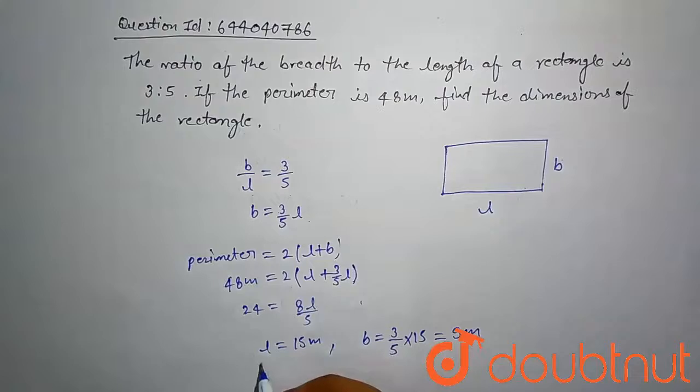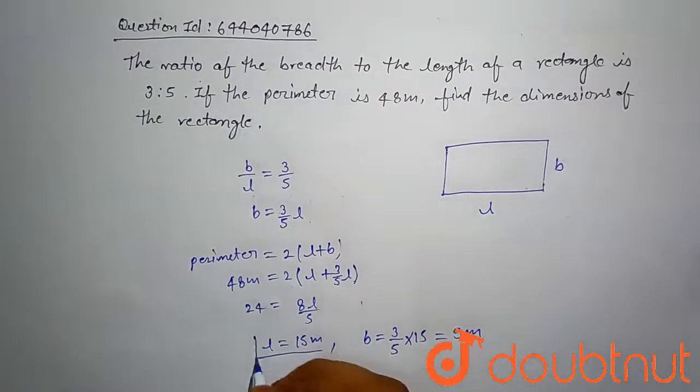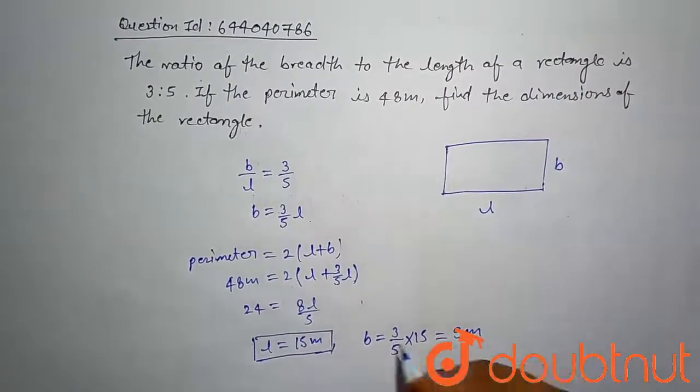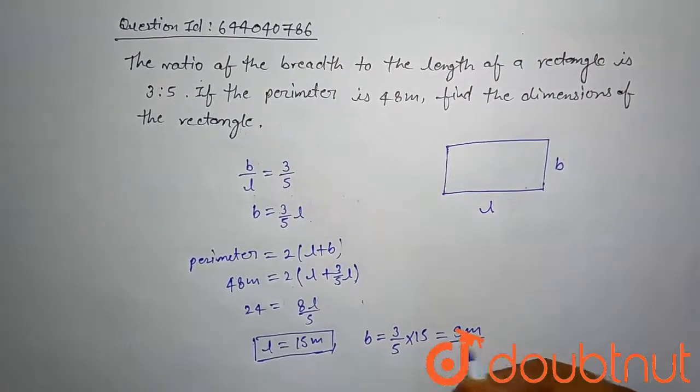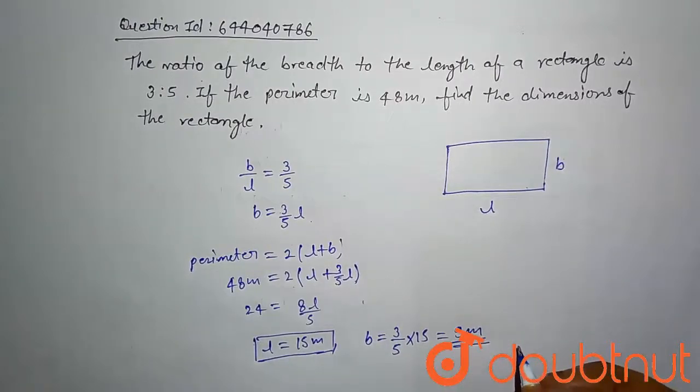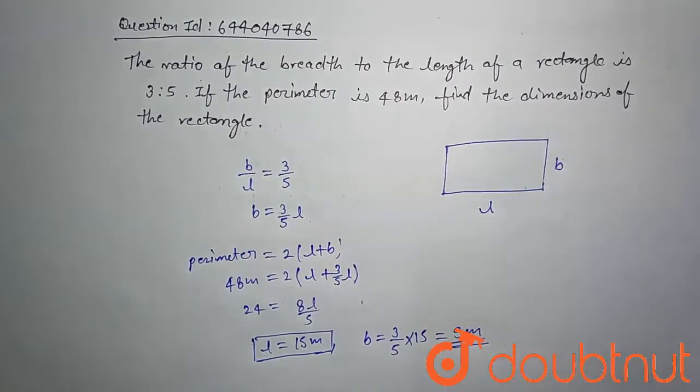Then our problem is find the dimension of the rectangle. The rectangle has length equal to 15 meters and width is 9 meters. This is our final answer. Thank you.